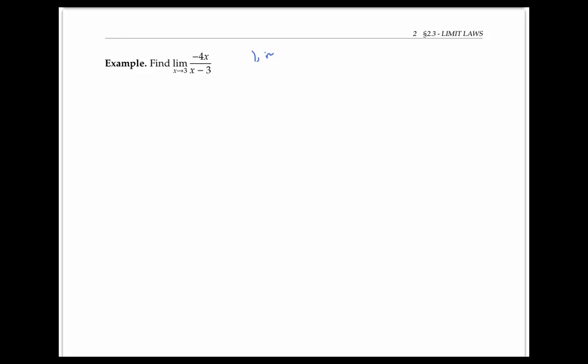In this example, the limit of the numerator, negative 4x, is just negative 12, which we can see by plugging in three for x. But the limit as x goes to three of the denominator is zero. So we're exactly in one of these situations where the numerator goes to a finite non-zero number, but the denominator goes to zero.